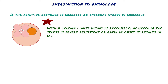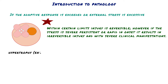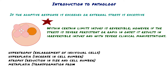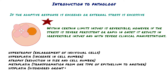These adaptations include hypertrophy — enlargement of individual cells; hyperplasia — increase in cell number; atrophy — reduction in size and cell number; metaplasia — transformation from one type of epithelium to another; and dysplasia — disordered growth of cells.